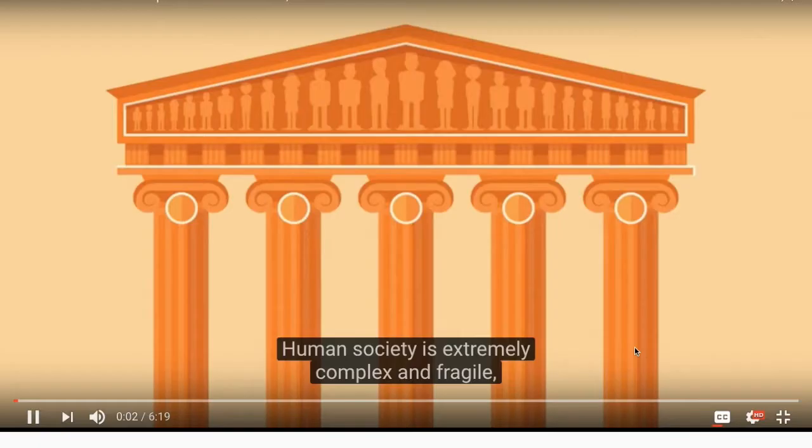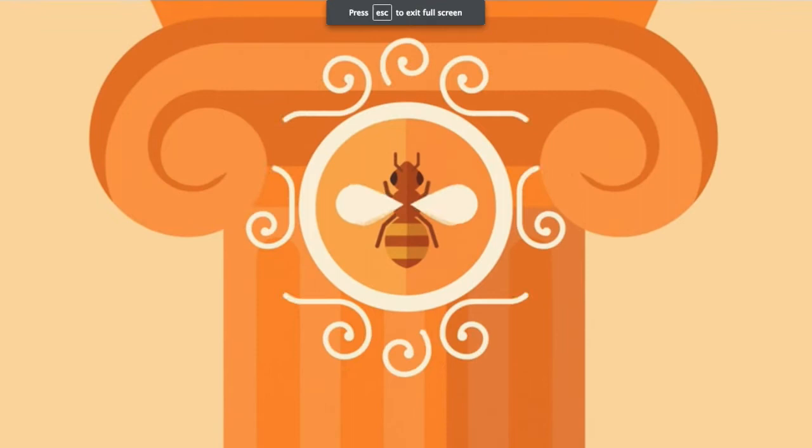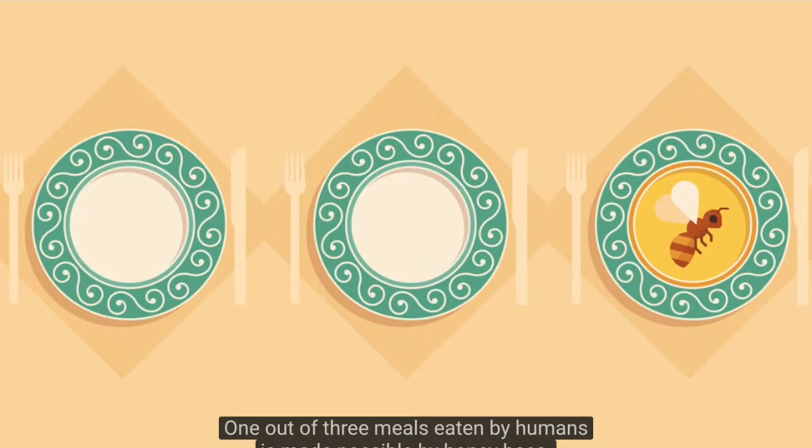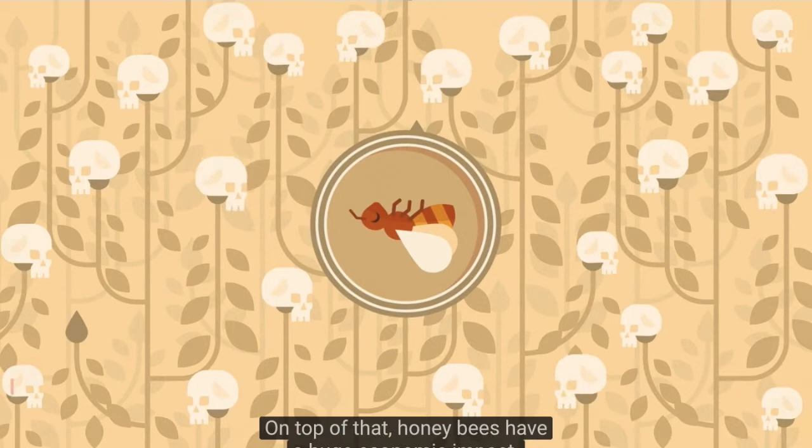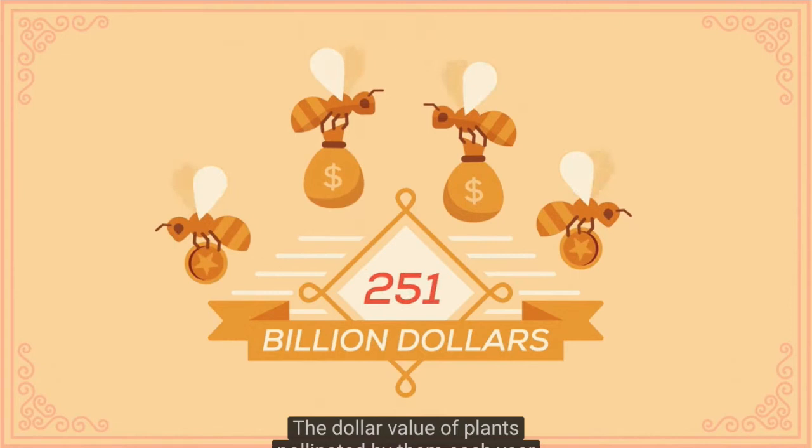Human society is extremely complex and fragile, built upon various pillars. One of them is the honeybee. One out of three meals eaten by humans is made possible by honeybees. They are so important that if all the honeybees were to die out, thousands of plants would follow, which could lead to millions of people starving in the following years. On top of that, honeybees have a huge economic impact.